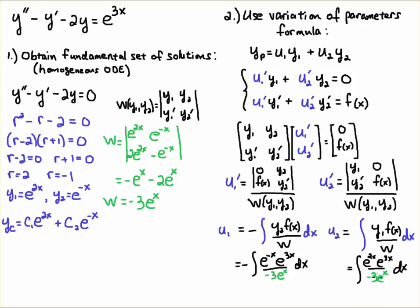I'll put the Wronskian -3e^x in the denominator for both formulas — you only have to calculate it once. y1 = e^(2x) and f(x) = e^(3x). You might wonder what if you swapped y1 and y2 — that's okay, don't worry. Your Wronskian will reverse sign, the minus sign shifts, and everything works out the same. There's nothing special about the order in which I chose my functions; reversing them gives the same result.